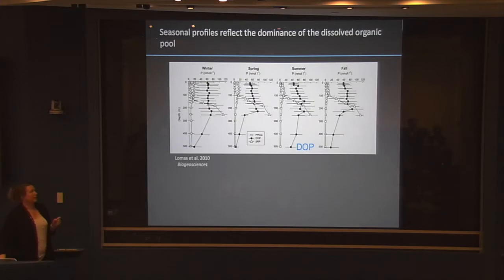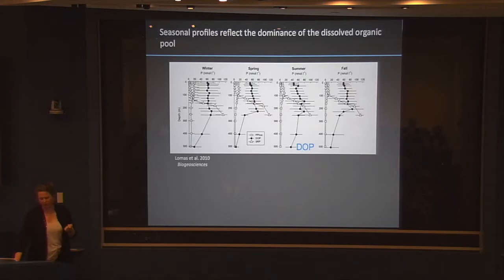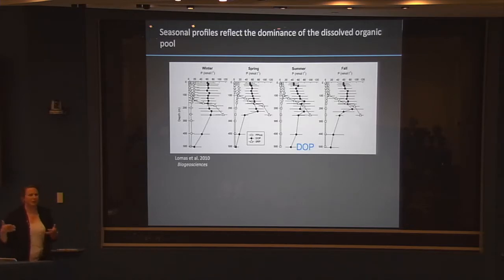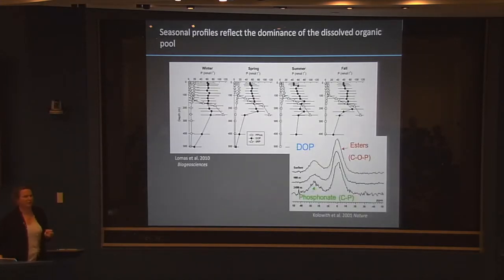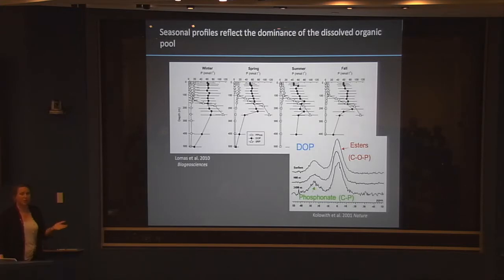Depth profiles over the season show the inorganic phosphorus pool is basically pegged near zero, much smaller than the organic pool in the surface waters where trichodesmium occurs. Part of the challenge for predicting whether trichodesmium has enough phosphorus is this organic pool — we don't understand its bioavailability. It's largely a black box. We know phosphorus comes in two main bond forms: an ester bond with an oxygen, and a phosphonate bond which is a direct carbon-phosphorus bond. We know from genetic work that trichodesmium can use both forms, but we don't know if it can use every substrate in that pool.